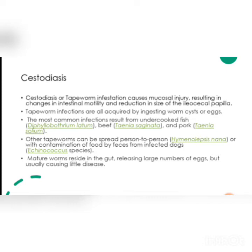The main route of transmission is food. When we consume uncooked food, for example beef, fish, or pork, that has previously been affected by tapeworms, this can cause the passage of tapeworm eggs into our body. It can also spread person to person through contamination of food by the feces of infected dogs.